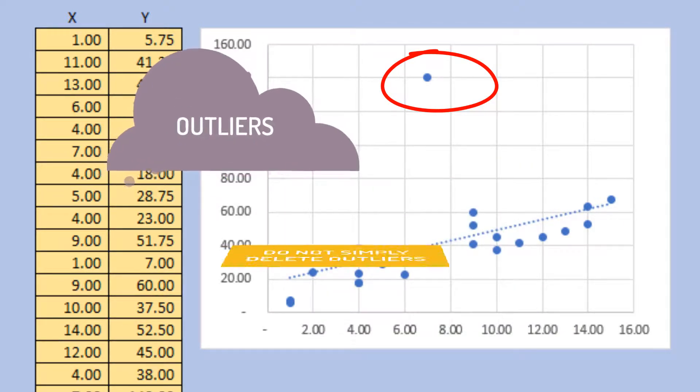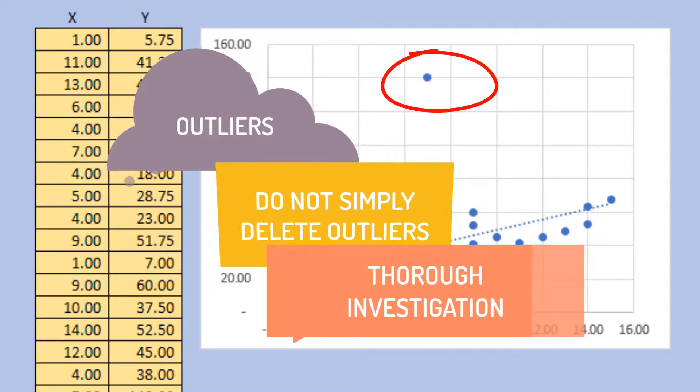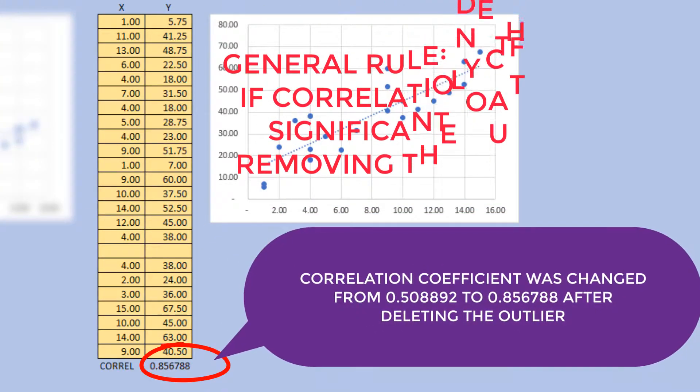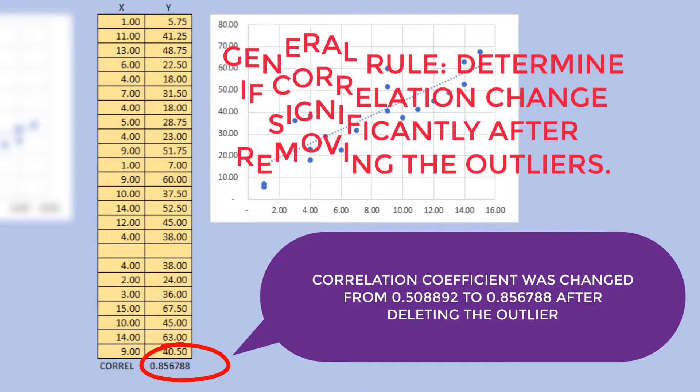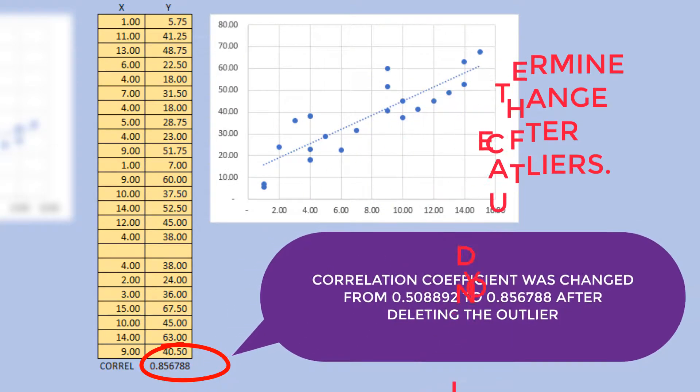We should not simply delete the outliers before a thorough investigation. Does it make sense to exclude those observations? The general rule is to determine first whether the calculated sample correlation changes significantly after removing a few outliers.